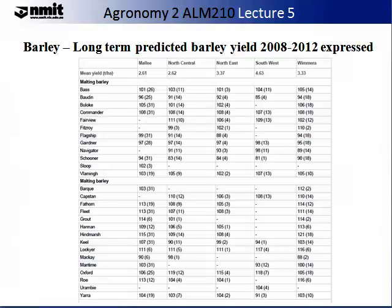The table on the slide shows results from long term predicted barley yields from 2008 to 2012. The numbers in brackets indicate the number of sites in that area. You will see that the yield varies depending on the location where the barley is grown. Mali, north central, north east, south west and Wirrimur areas were all compared. Different malting varieties and brewing varieties were also compared.